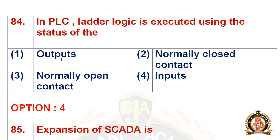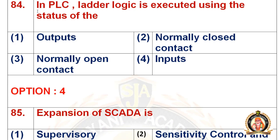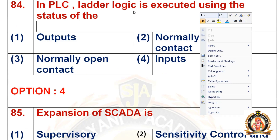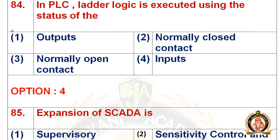Move on to the 84th question: in PLC, the ladder logic is executed using the status of dash. The options are: outputs, normally closed contact, normally open contact, and input. The right option is the fourth one — input. In PLC, the ladder logic is executed using the status of the inputs.